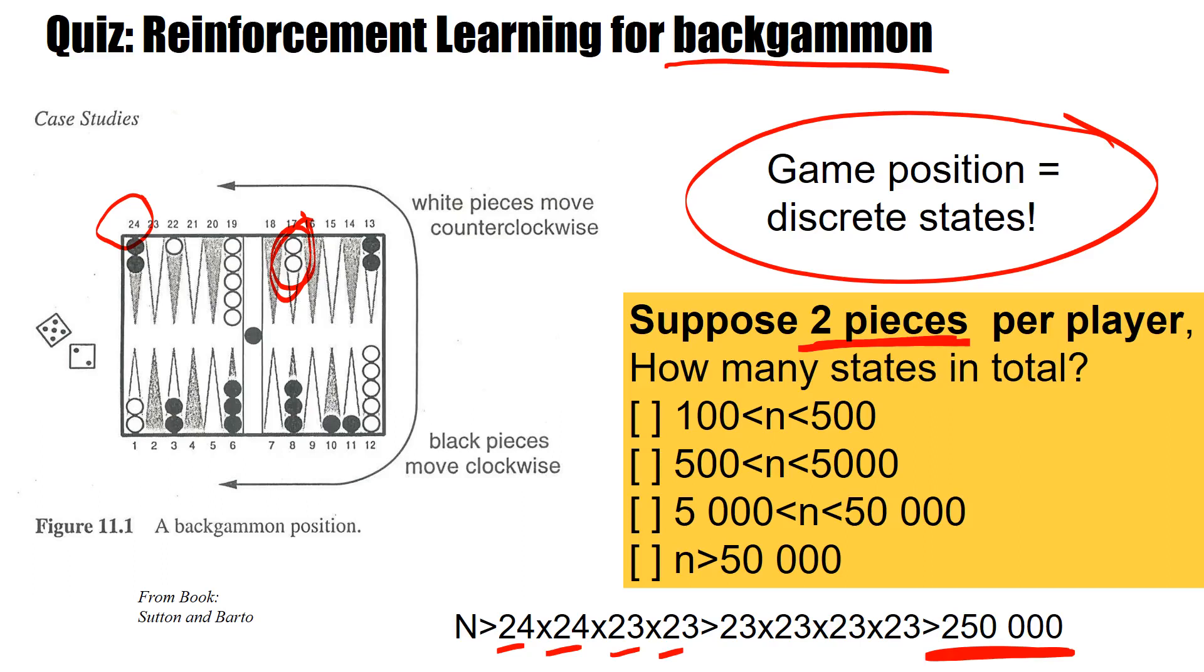And just estimate this, put this into the calculator. The number is huge, larger than 250,000. So even with just two pieces per player, the number of states can be enormous. And we have to keep that in mind for all applications of reinforcement learning.